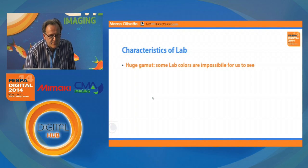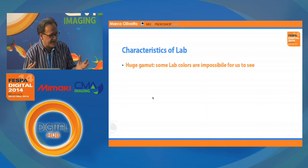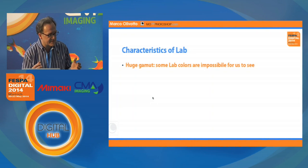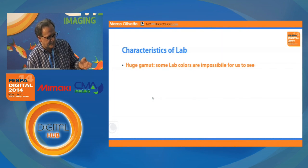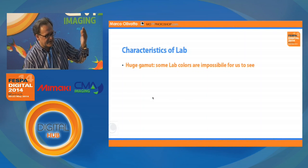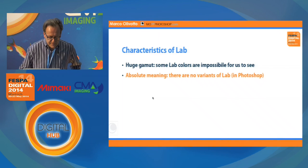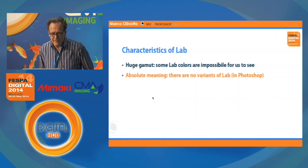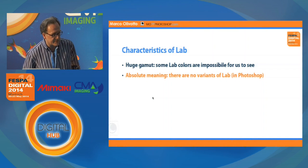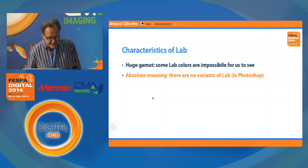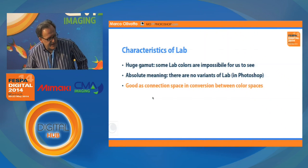LAB has a huge gamut. Anyone who was here yesterday knows what gamut is — it's the footprint, how big a palette we have. Some of the LAB colors are so vivid, so bright, so intense, that they are impossible for us to see. For instance, there is no way in any color space you use regularly, like any form of RGB, that you can represent the colors of a firework — but you can in LAB. You can't put them on a monitor or print them, but as a matter of principle it is possible. Also, LAB is the only color space in Photoshop that has an absolute meaning, because there are no variants of LAB. You may have many different RGBs, many different CMYKs, but only one LAB. This means there is no profile attached to it — you don't need it.